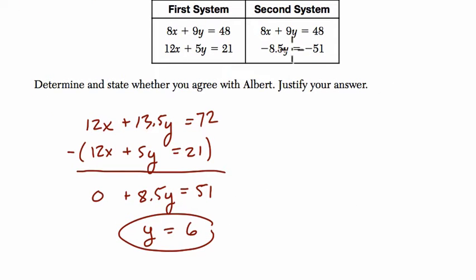So here, I'm going to notice, let's just try it out. What is negative 8.5 times 6? Well, that's negative 51. So yes, this so far is working. When y is 6, it solves both equations here and also balances this equation in this system.